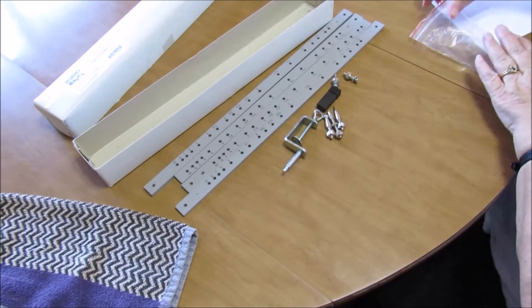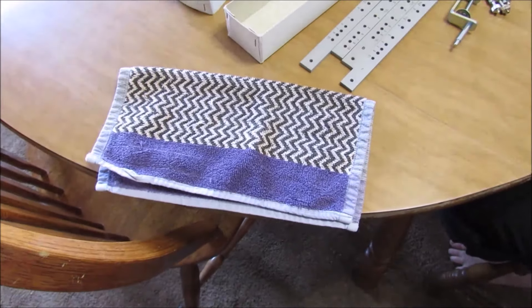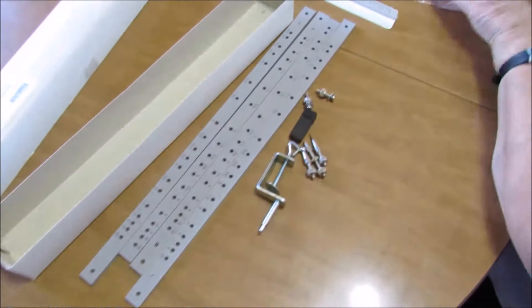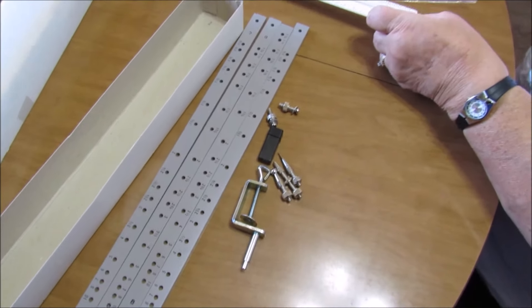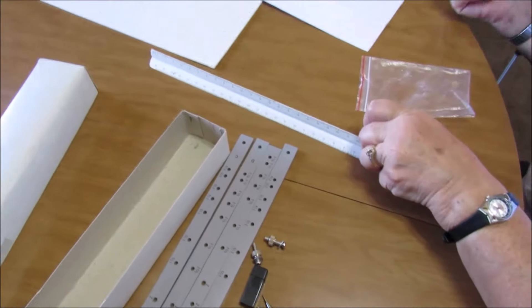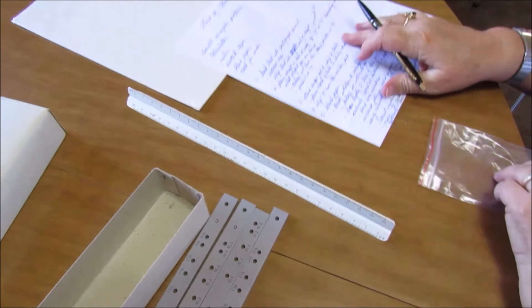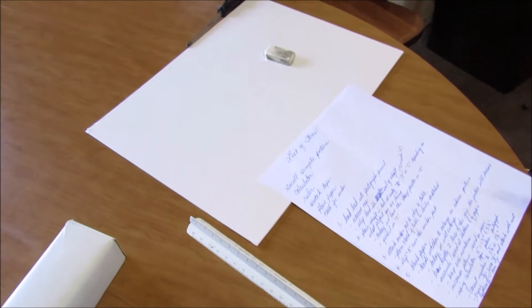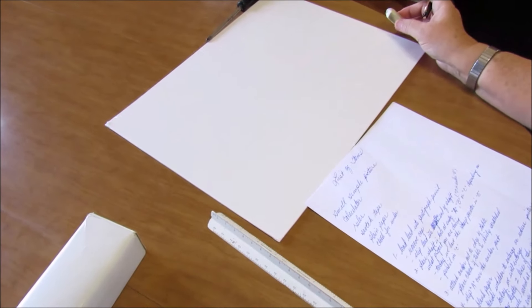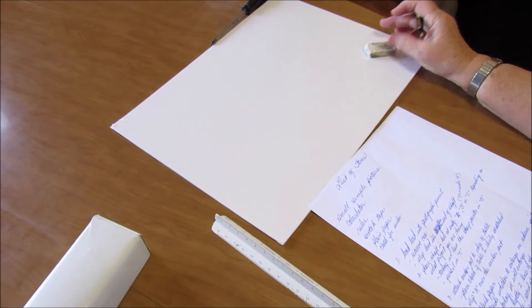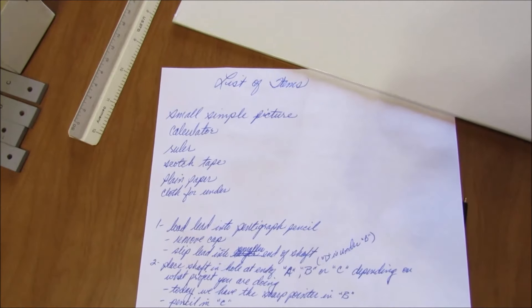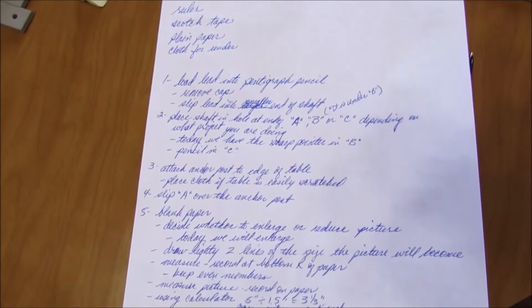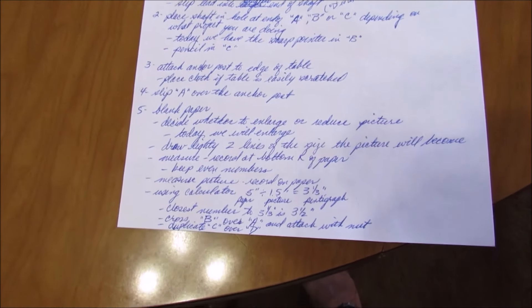What you'll need for using your pantograph is something to protect the table, a pantograph of course, a ruler, a picture which we don't have out yet, and in this case we're going to transfer the picture to an art board. Also important, probably most important, is a list of instructions.